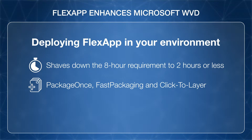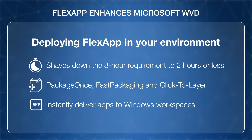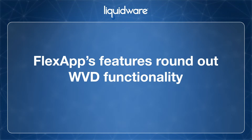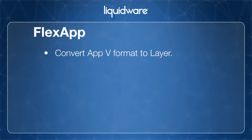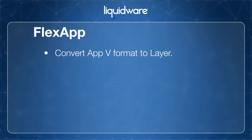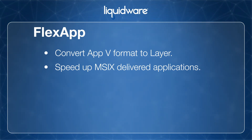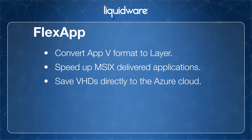With its package-once, fast packaging and click-to-layer features, FlexApp instantly delivers apps to Windows workspaces on-demand, whether they are physical, virtual or Azure cloud hosted. FlexApp's features round out WVD functionality for a more complete application provisioning and delivery practice. The solution provides a ConvertAppV format to layer feature that allows customers to convert AppV apps to the FlexApp format. Another feature speeds up MSIX delivered applications, and FlexApp allows users to save VHDs directly to the Azure cloud as well.